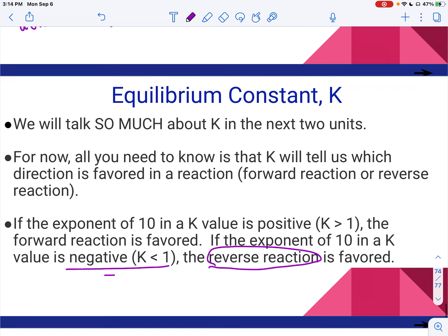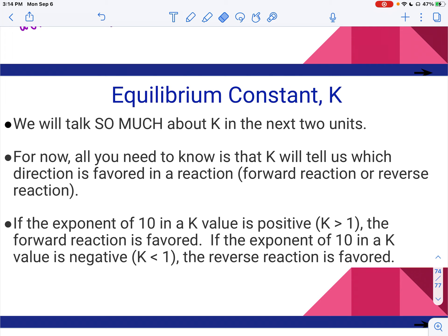The last thing I want to talk about in this video is something called the equilibrium constant. Our next unit is going to be equilibrium, and we are going to talk about K — we'll also talk about K in our acid-base unit. For right now, all you need to know is that K tells us which direction is favored. If the exponent of 10 in a K value in scientific notation is positive — meaning K is greater than 1 — the forward reaction is favored. If the exponent is negative, the reverse reaction is favored.